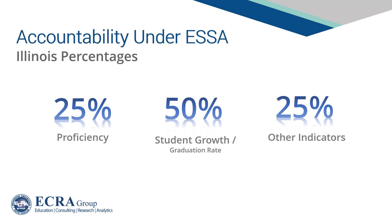Researchers and policy makers now recognize that student growth is a more equitable approach to assessing improvement efforts. As a result, student growth has become a significant factor in school improvement and accountability systems in Illinois. Under the new ISBE accountability framework, student growth will contribute 50% to a school's quality rating. Initially, Illinois will measure student growth in grades 4 through 8, and graduation rates will take the place of student growth at the high school level. However, student growth will likely expand to the high school level in future years.